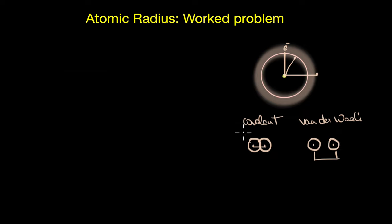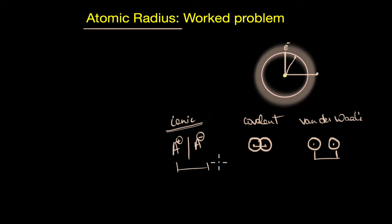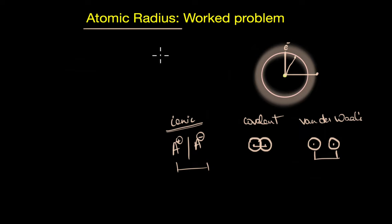Ionic radius: ions are formed when an electron is removed from or added to a neutral atom. We can find ionic radii by measuring the distance between the cation and anion in ionic crystals. Interestingly, ionic radii exhibit a similar trend to atomic radii. So the definition of atomic radius varies depending on whether we are looking at bonded atoms, non-bonded atoms, or metallic radius. That's a brief recap — let's now jump to our questions.